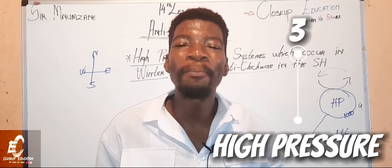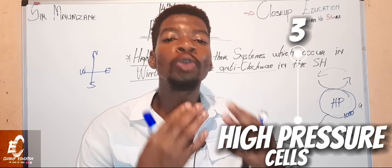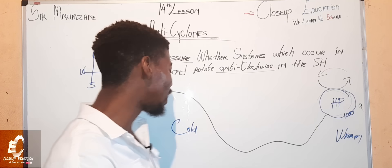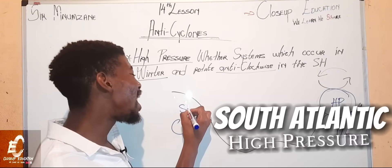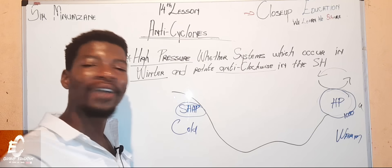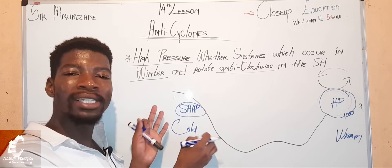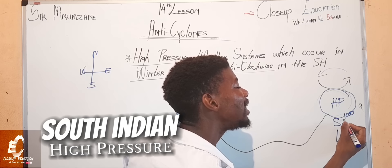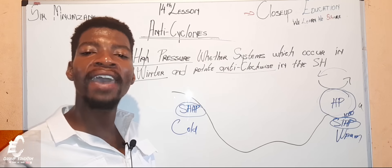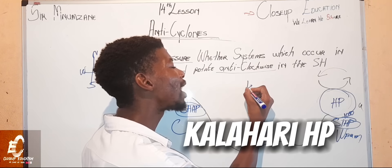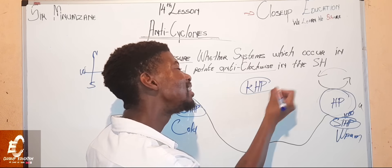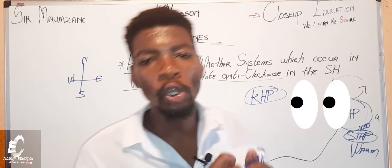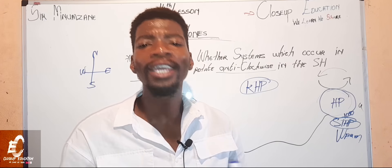There are three high pressure cells which affect South Africa. First, we have the South Atlantic High Pressure on the western cape side. Then on the eastern side we have the South Indian High Pressure. And we also have the Kalahari High Pressure. These are the three anti-cyclones which affect South Africa in winter.